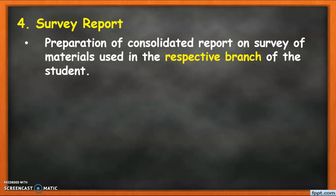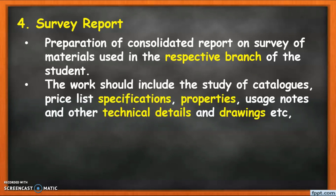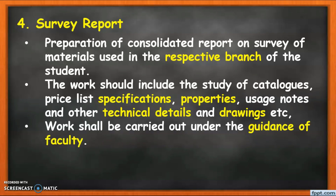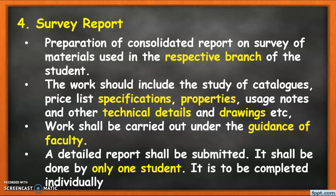The fourth option is a survey report — specifically, preparation of a consolidated survey report on materials used in the respective branch. Students need to select any topic from their respective branch and carry out a study of various catalogs, price lists, specifications, properties, usage, technical details, drawings, etc. You have to collect the technical details on the selected topic, and the work shall be carried out under the guidance of a faculty mentor. After completion of the survey, you need to submit a detailed report to your mentor.